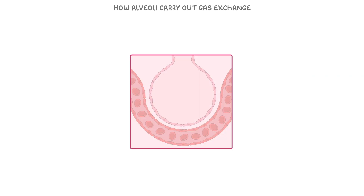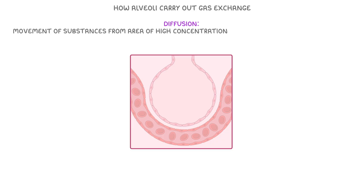Next, let's look at how the alveoli carry out gas exchange. The way gases move between the alveoli and the capillaries surrounding them is called diffusion, and we use this word to describe the movement of substances from an area of high concentration to an area of low concentration.